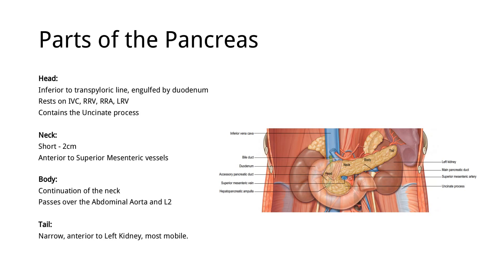Next we have the neck. The neck is relatively short, around 2 cm long, and it is anterior to the superior mesenteric vessels, which we can see right here. Then we have the body, which is the continuation — it passes over the abdominal aorta and the L2 vertebra. The tail is the most narrow part of the pancreas, anterior to the left kidney, and also the most mobile part.